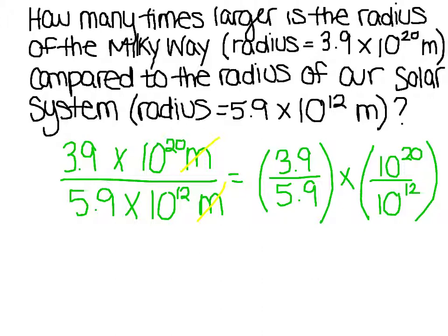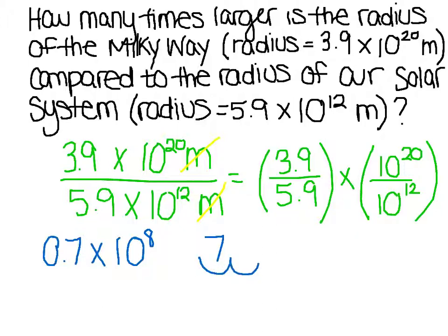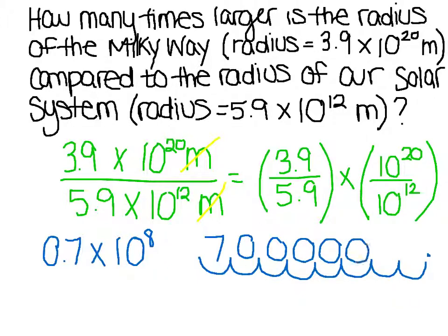It's asking how many times, so no units are required, because our meters cancel out when divided. Continuing, 3.9 divided by 5.9 is 0.7, and we keep the base and subtract the exponents, giving us 0.7 times 10 to the 8th. This is not in proper scientific notation, so I want you to write it in standard form first. Moving the decimal 1, 2, 3, 4, 5, 6, 7, 8 spots to the right and filling in with zeros, then writing with proper commas, we get 70,000,000 — 70 million times larger.